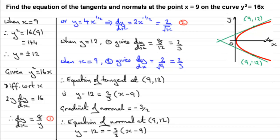Let's just draw that normal in — it's going to look something like that, carrying on up there, being at right angles to the tangent.